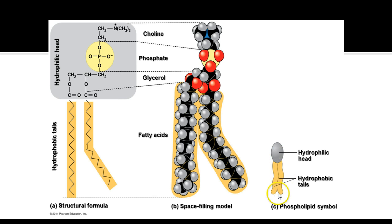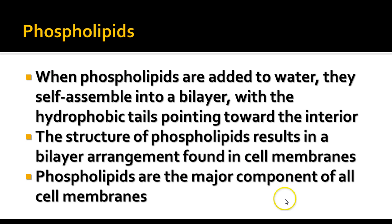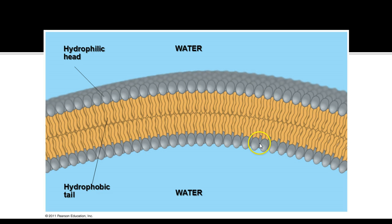The hydrophilic head likes water and is somewhat polar because of the groups on it. The hydrophobic tails resist mixing with water. When you put phospholipids in water, they self-assemble into a bilayer — a double layer with the hydrophobic tails pointing toward the interior and the hydrophilic heads pointing out toward the water. This is what results in the bilayer arrangement in cell membranes. Phospholipids are the major component of all cell membranes, though other molecules are present as well.